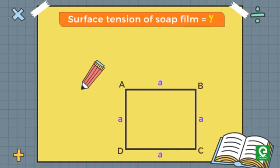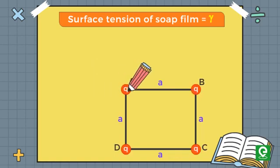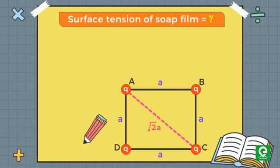Since we have charges placed at all four vertices of the square film, each charge will experience force acting on it from all the other three charges. The electrostatic force acting on the point charge placed at A due to the point charge at B is F_AB.